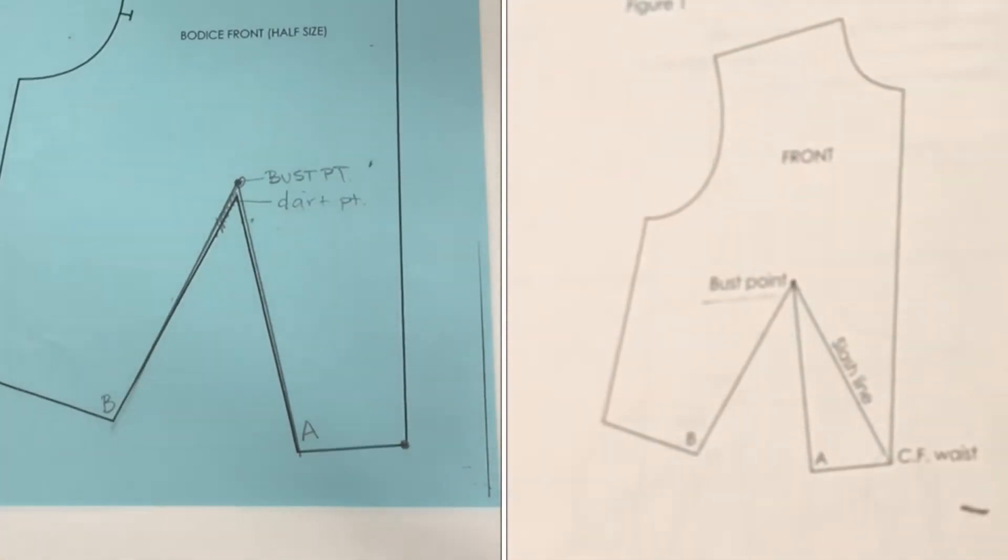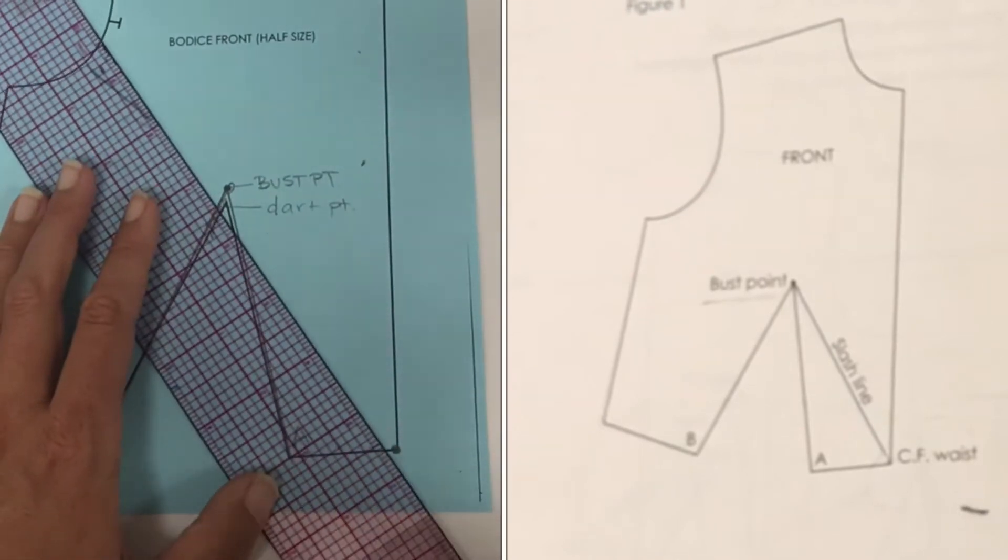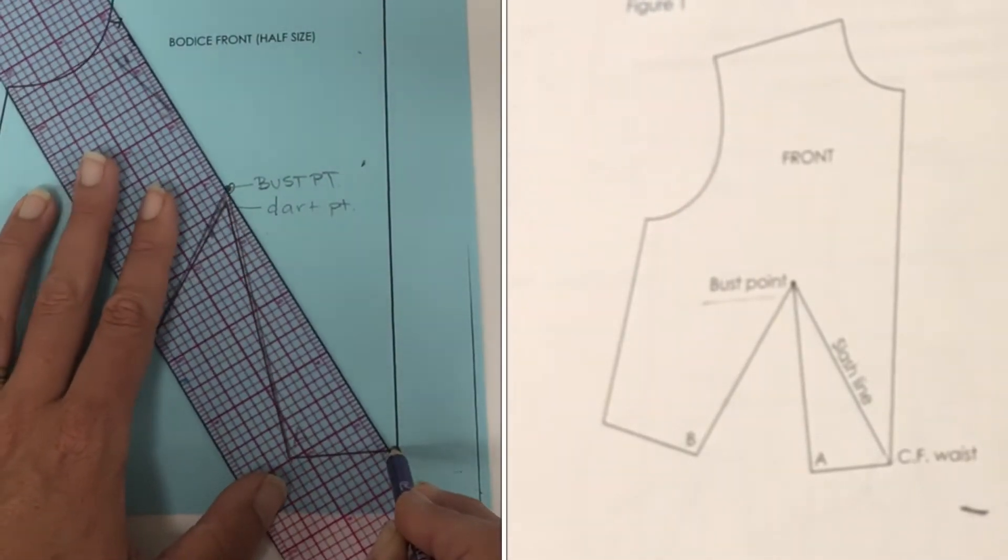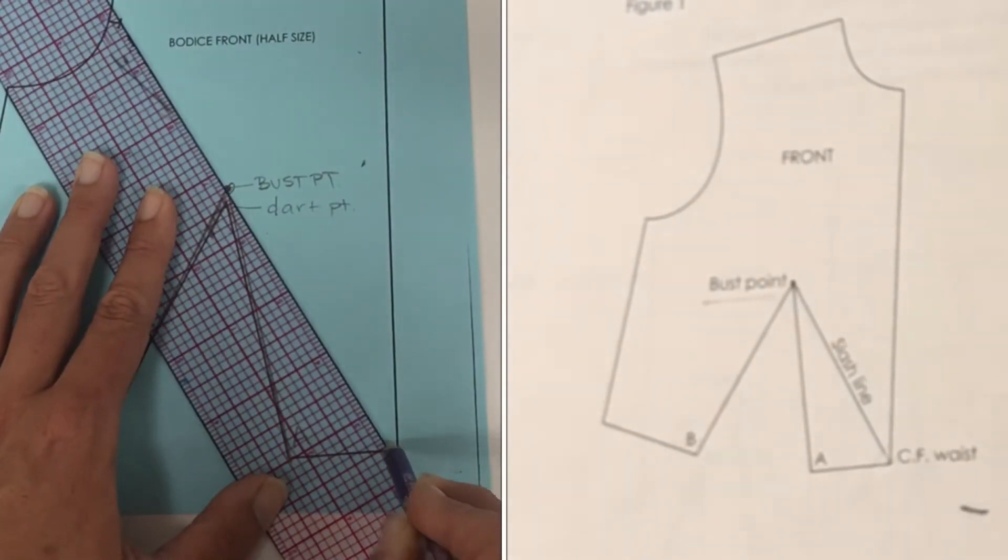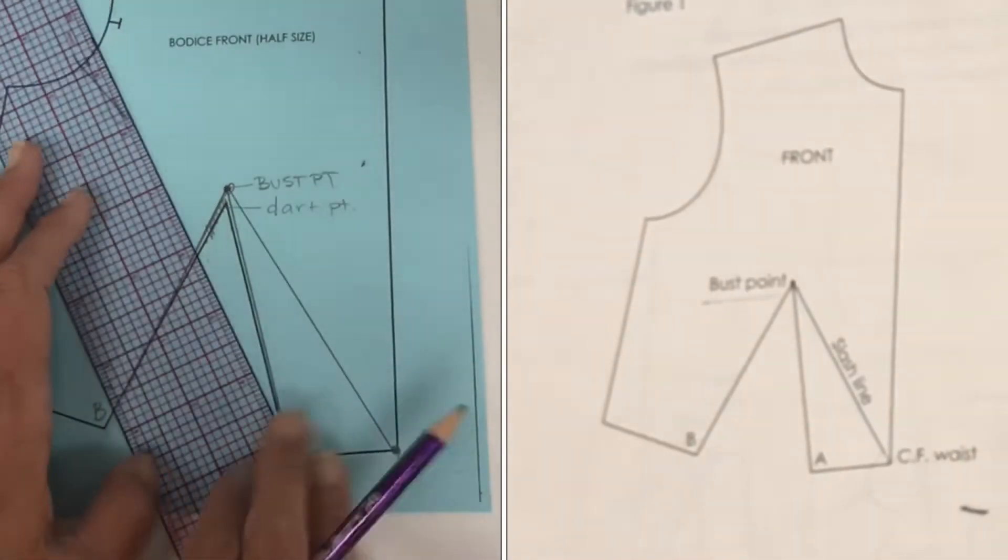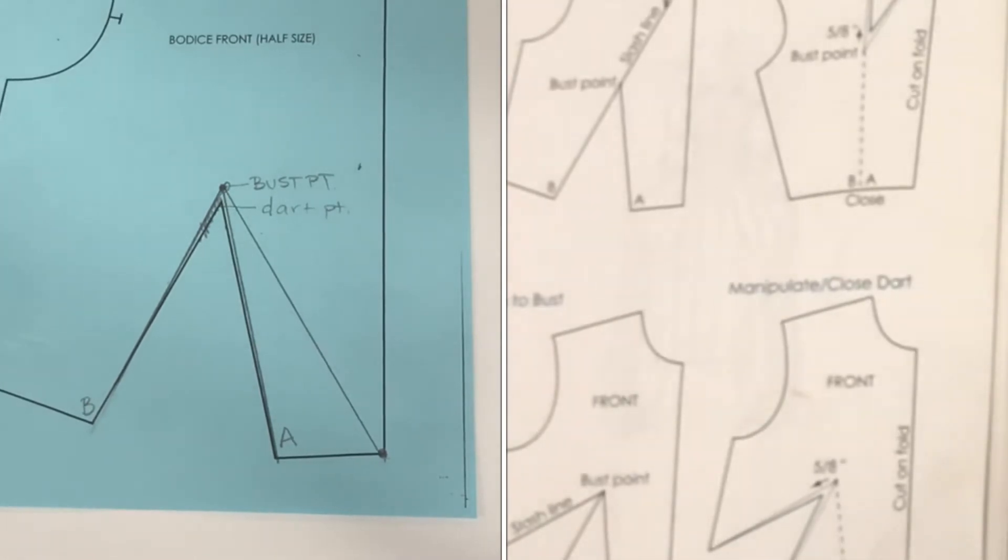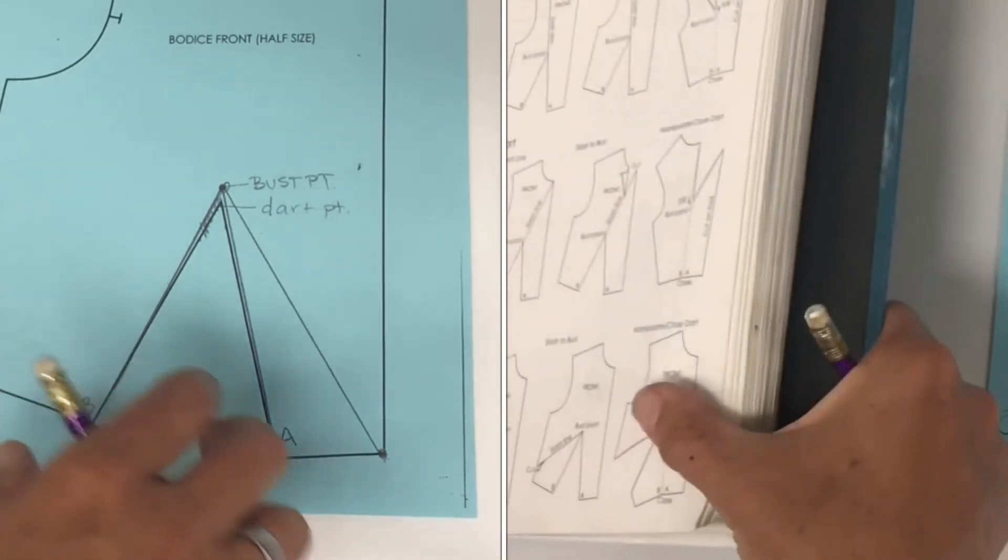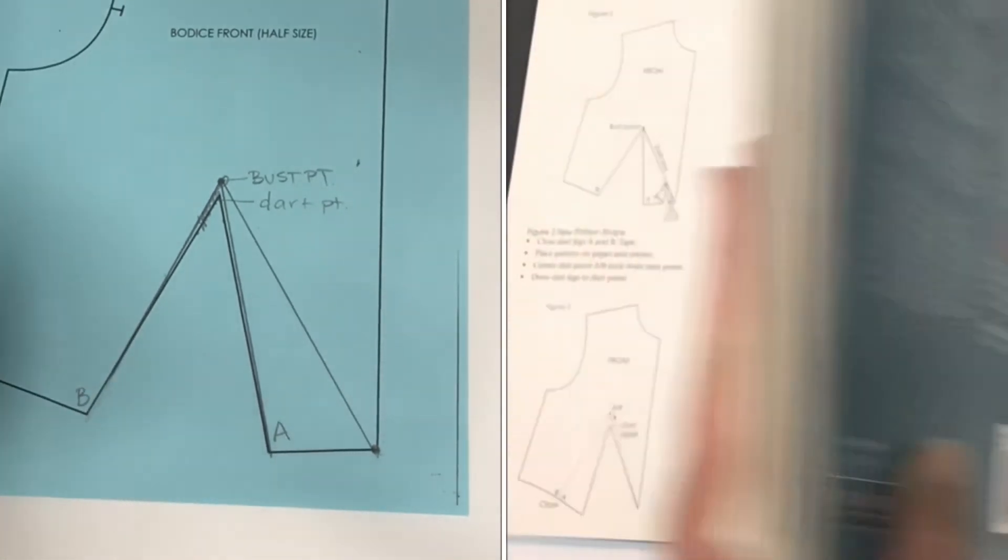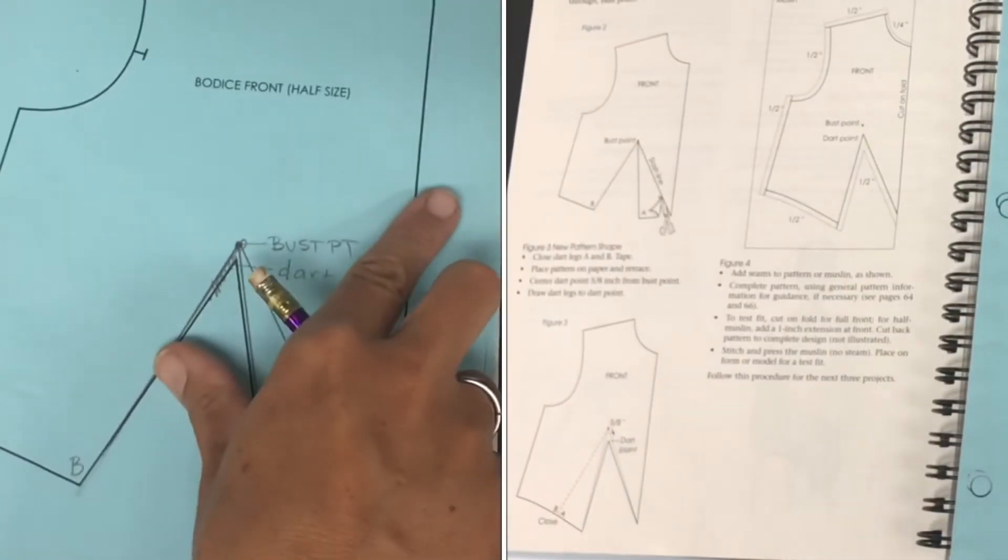Okay, so use a ruler. Connect those two points. There we are. Okay, that is my slash line. Okay, let's see if I can get this in the camera for you. Okay, great.